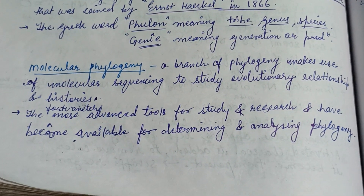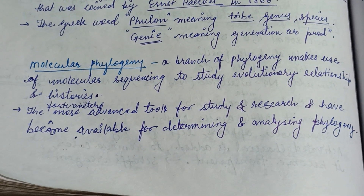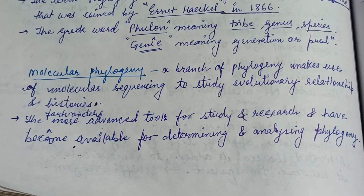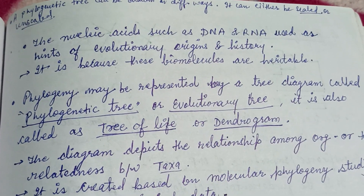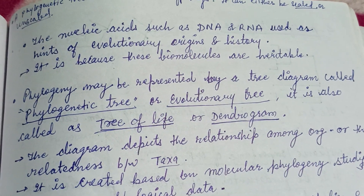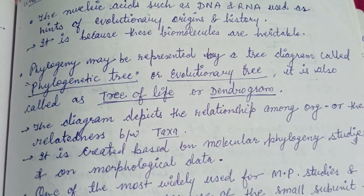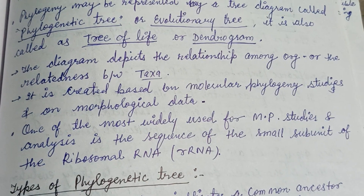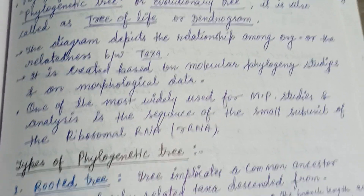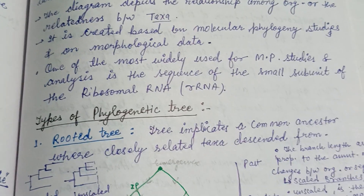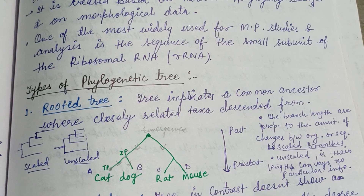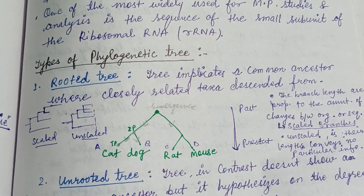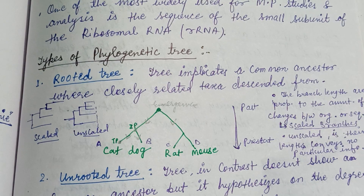Molecular phylogeny is a branch of phylogeny that makes use of molecular sequencing to study evolutionary relationships and history. Phylogeny may be represented by a tree diagram called a phylogenetic tree, evolutionary tree, tree of life, or dendrogram. One of the most widely used sequences for molecular phylogeny studies is the small subunit ribosomal RNA, that is rRNA.